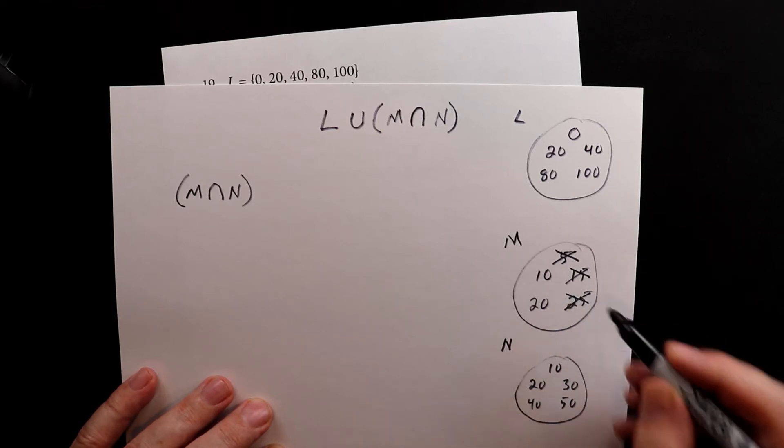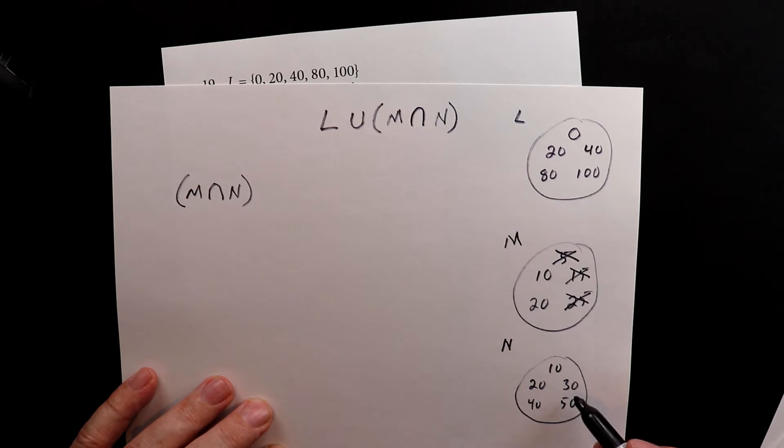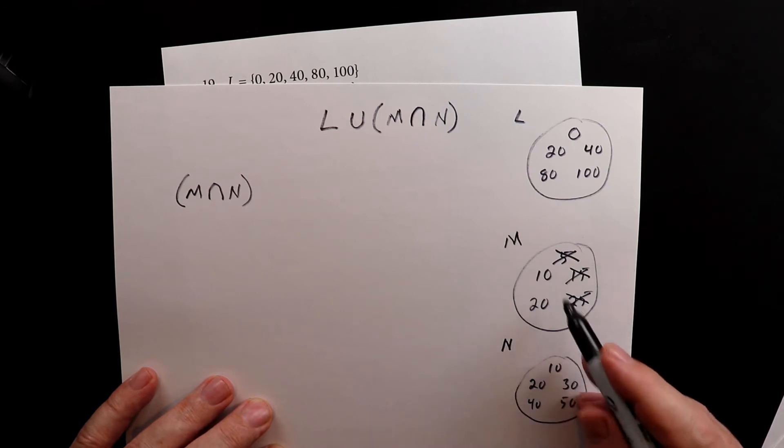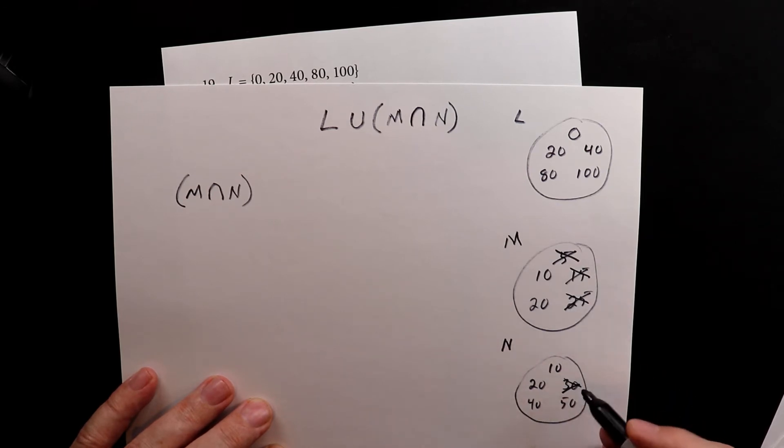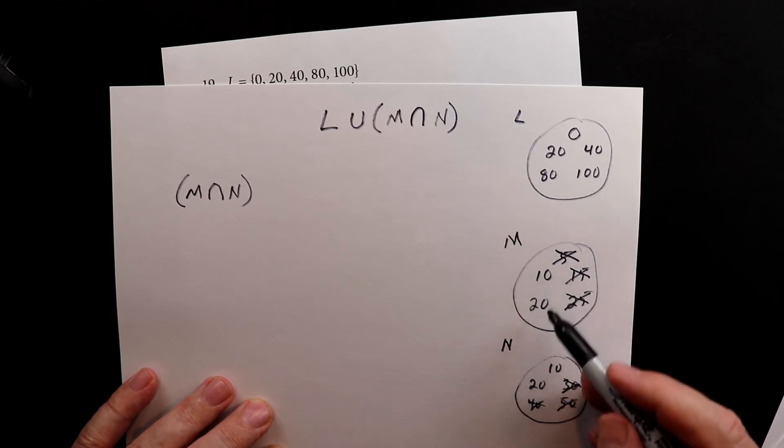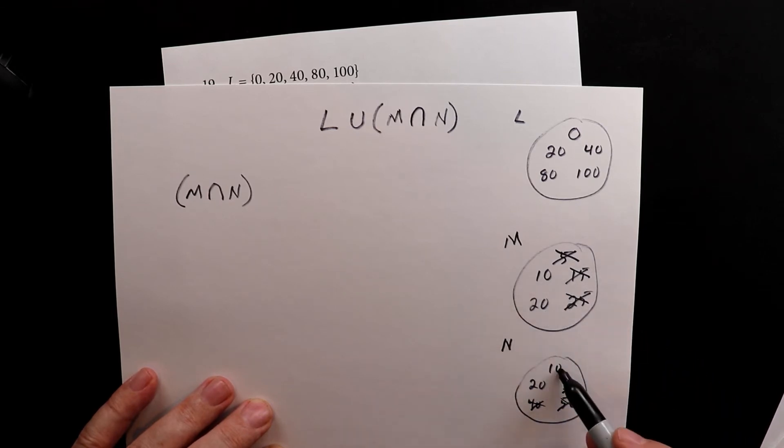There's no 25. And then look, there's no 30 up here, so that goes away. The 40 doesn't live up there and the 50 doesn't live up there. So the only things that these have in common are 10 and 20, 10 and 20.